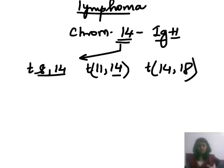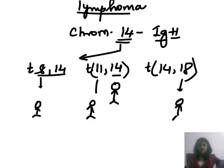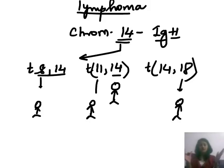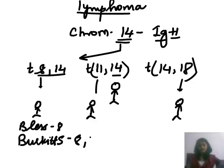To remember these, consider chromosome 14 as a teenager with siblings aged 8, 11, and 18. The 14-year-old and the 8-year-old have a 6-year gap, so the teenager treats the 8-year-old like a child and blesses them. 'Bless' means Burkitt's — so Burkitt's lymphoma is translocation 8;14.